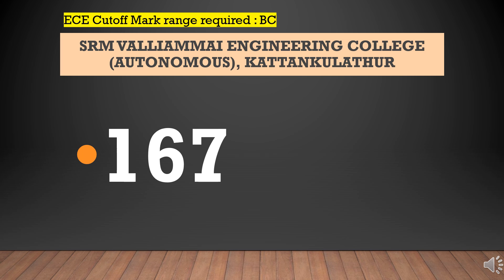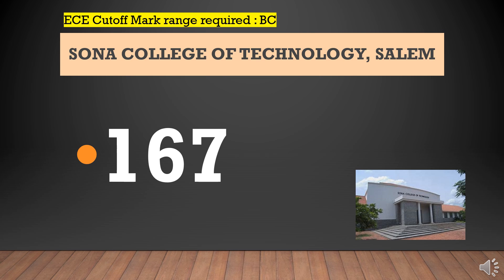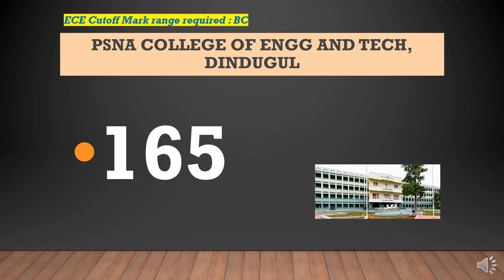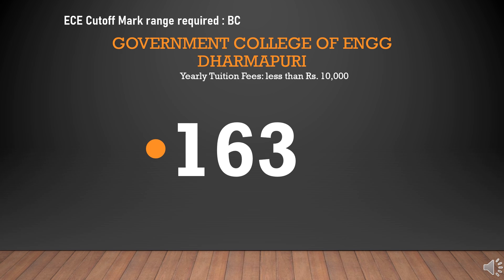SRM Valliammai Engineering College: Cut-Off Required for ECE BC is 167. Thanthai Periyar Government Institute of Technology: Cut-Off Required for ECE BC is 167. Sona College of Technology: Cut-Off Required for ECE BC is 167. PSNA College of Engineering and Technology Dindigul: Cut-Off Required for ECE BC is 165. Government College of Engineering Srirangam: Cut-Off Required for ECE BC is 164 (Yearly Tuition Fees Less Than Rupees 10,000). Government College of Engineering Dharmapuri: Cut-Off Required for ECE BC is 163 (Yearly Tuition Fees Less Than Rupees 10,000).